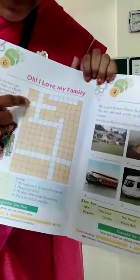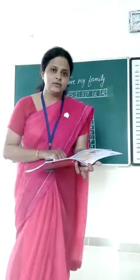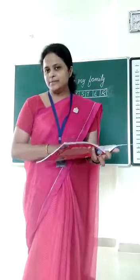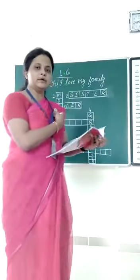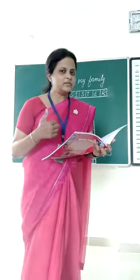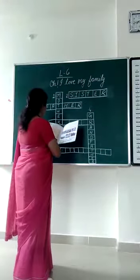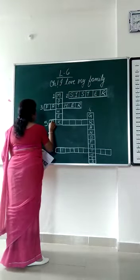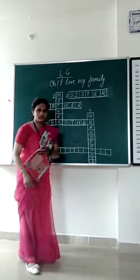Now come to number five: he plays with me in the evening. Who plays with you in the evening? Maybe your friend, or maybe your brother. We will write Brother here. Why not friend? Because a friend is not our family member, and here we are talking about my family. So we write Brother. The spelling is B-R-O-T-H-E-R. In number five, you have to write Brother.